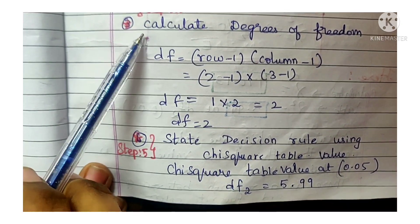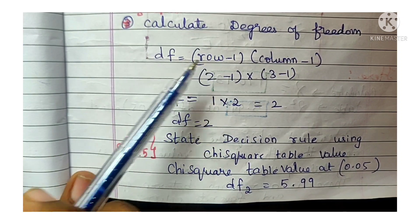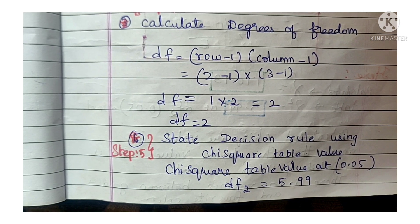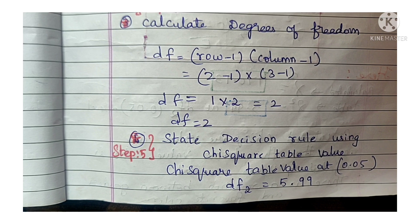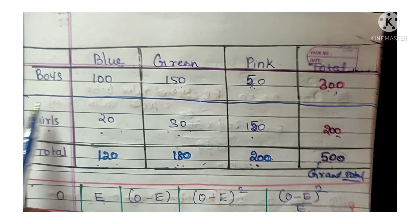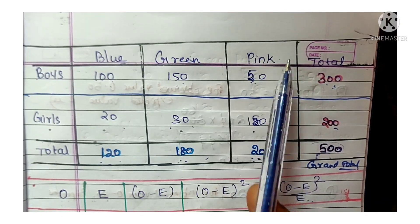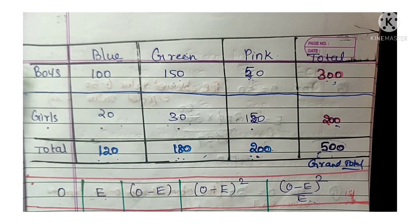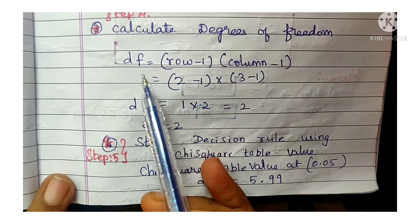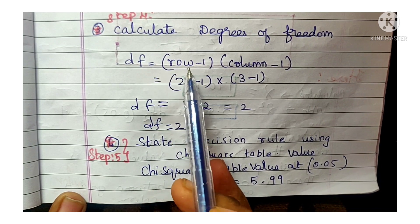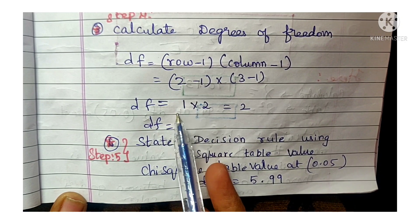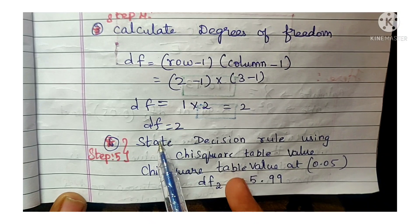Step 4: Calculate the degrees of freedom. The formula is df = (rows − 1) × (columns − 1). We have 2 rows (boys, girls) and 3 columns (blue, green, pink). So df = (2 − 1) × (3 − 1) = 1 × 2 = 2.